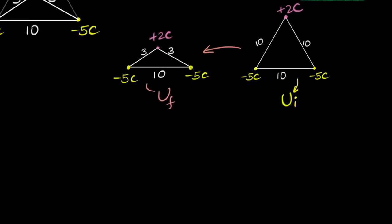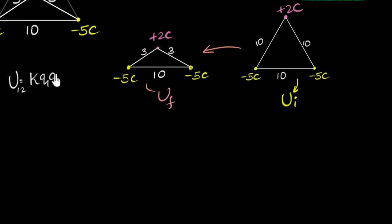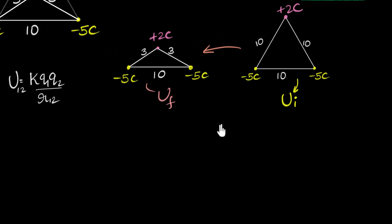A quick reminder of how we calculate potential energies of a system — we've seen this in the previous video. First think about what is the potential energy of two charges. The potential energy of a system of just two charges would be K Q1 Q2 divided by R12, where R12 is the distance between them. And if you want to calculate the potential energy of a system of three charges, you take two at a time: potential energy of this pair plus potential energy of this pair plus potential energy of this pair. Then once you substitute, we can subtract and get an answer.